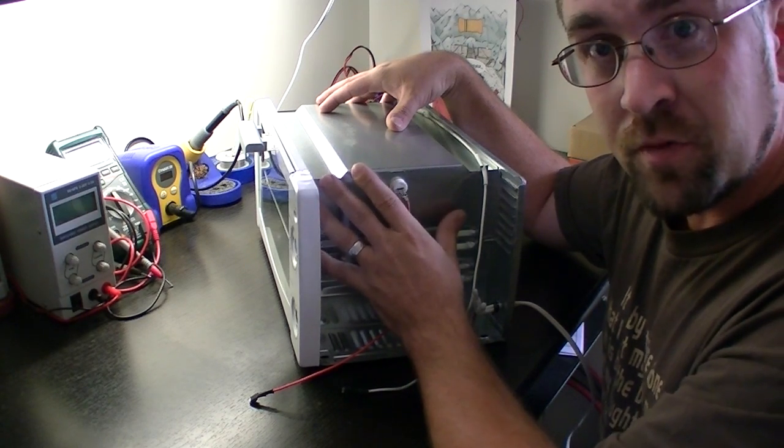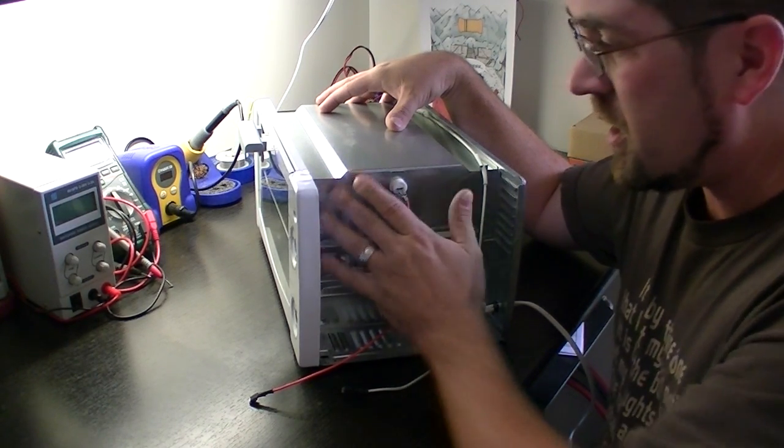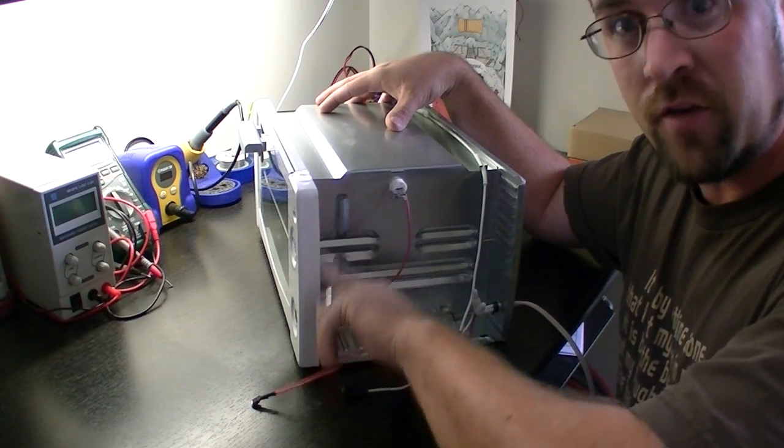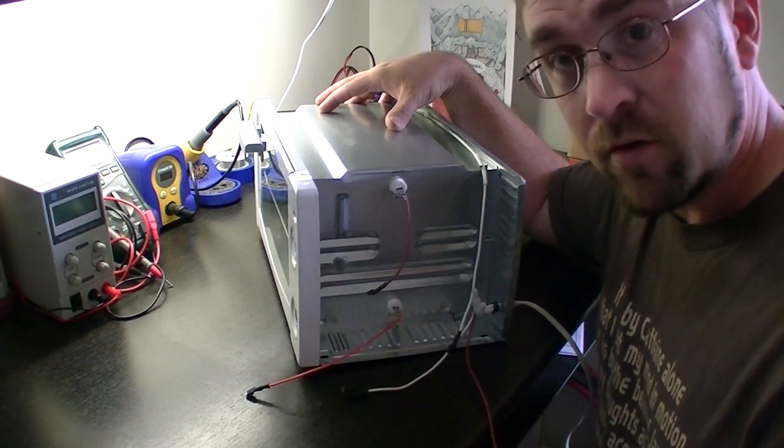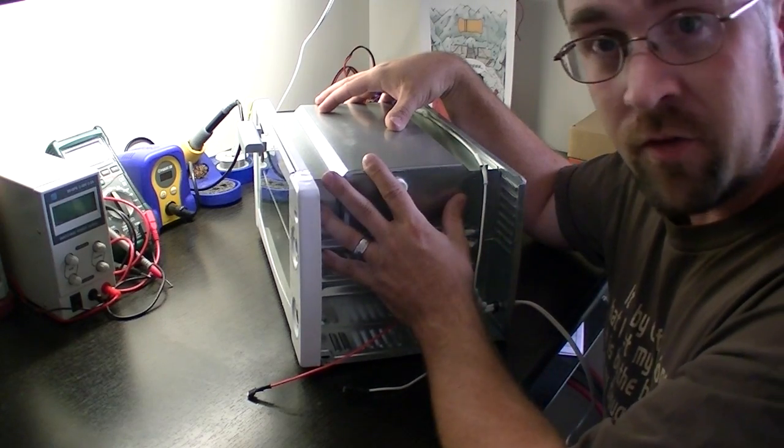And it will also protect the electronics from the high heat when we rebuild the electronics into this front panel. So let's get this cut up and then we'll mount it onto the side of the box.